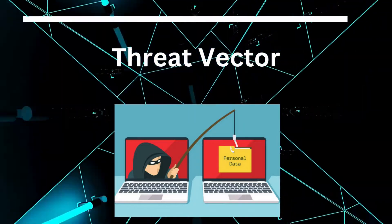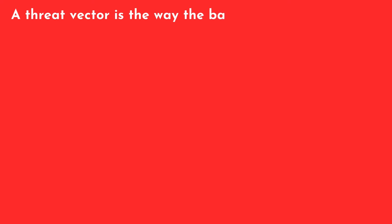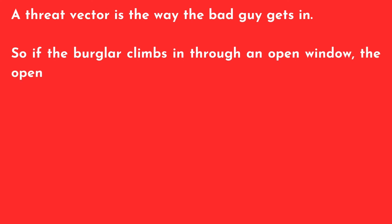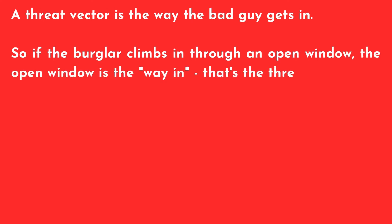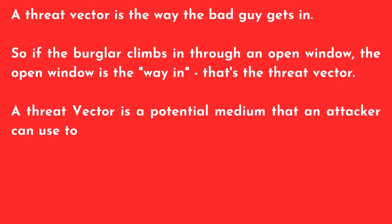What is a threat vector? A threat vector is the way the bad guy gets in. So if the burglar climbs in through an open window, the open window is the way in — that's the threat vector. A threat vector is a potential medium that an attacker can use to exploit a vulnerability.